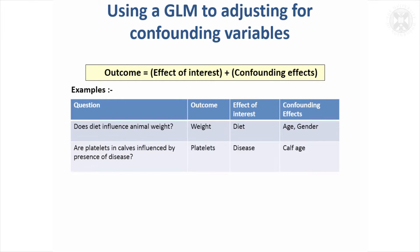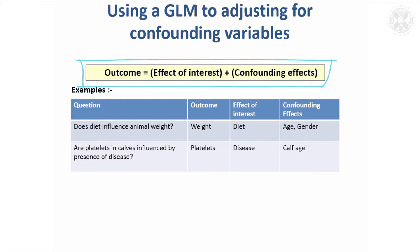We looked at general linear models with continuous effects where we were adjusting for pre-treatment values. Sometimes there might be confounding values — measurements that are useful to adjust for. In that case, you would fit both your effect of interest and any confounding effects in the model.